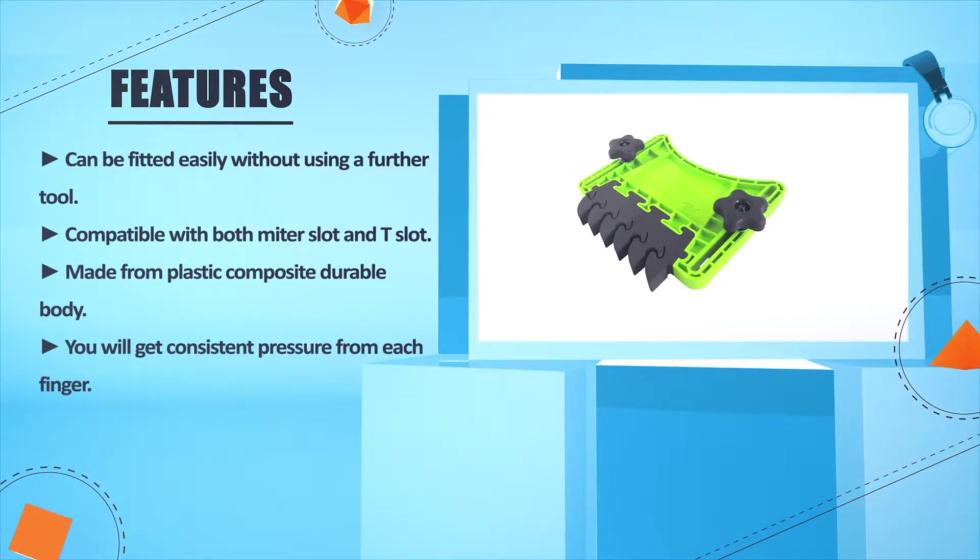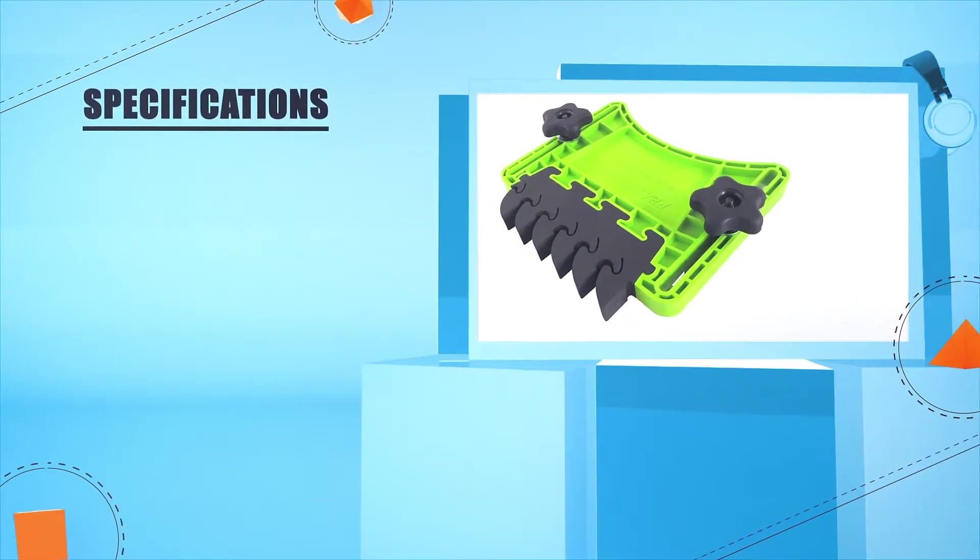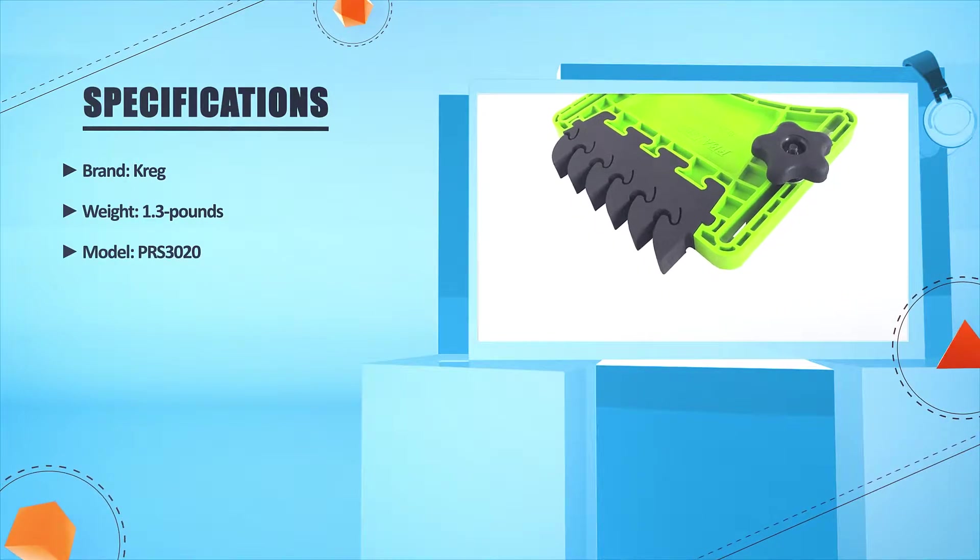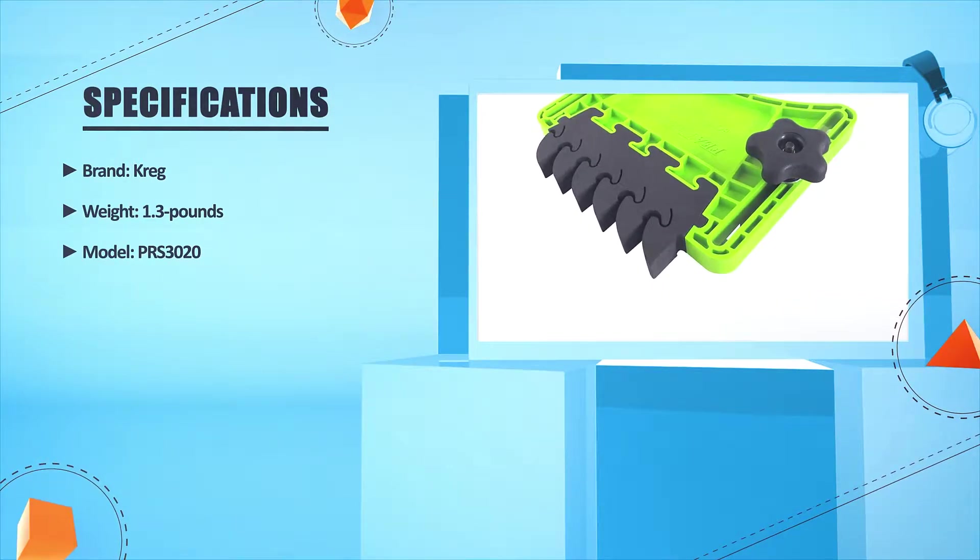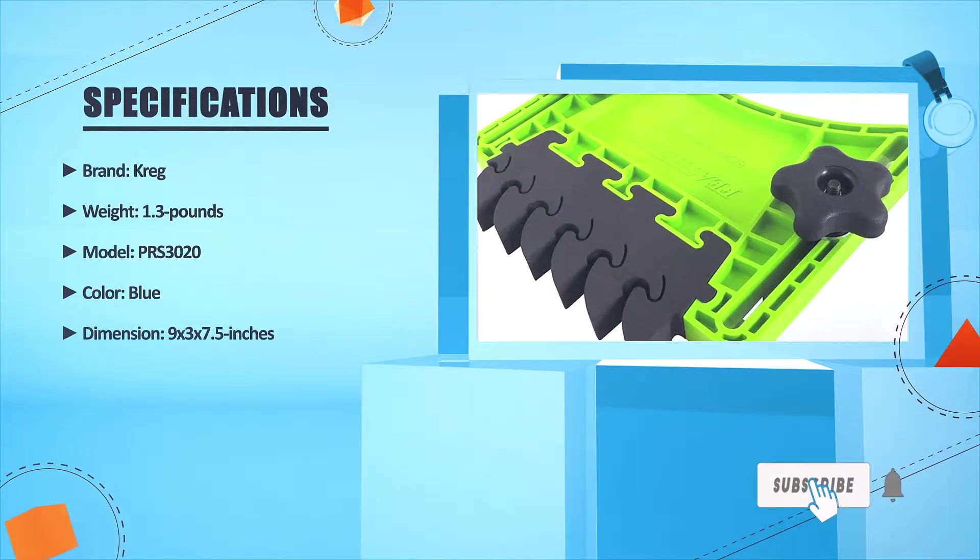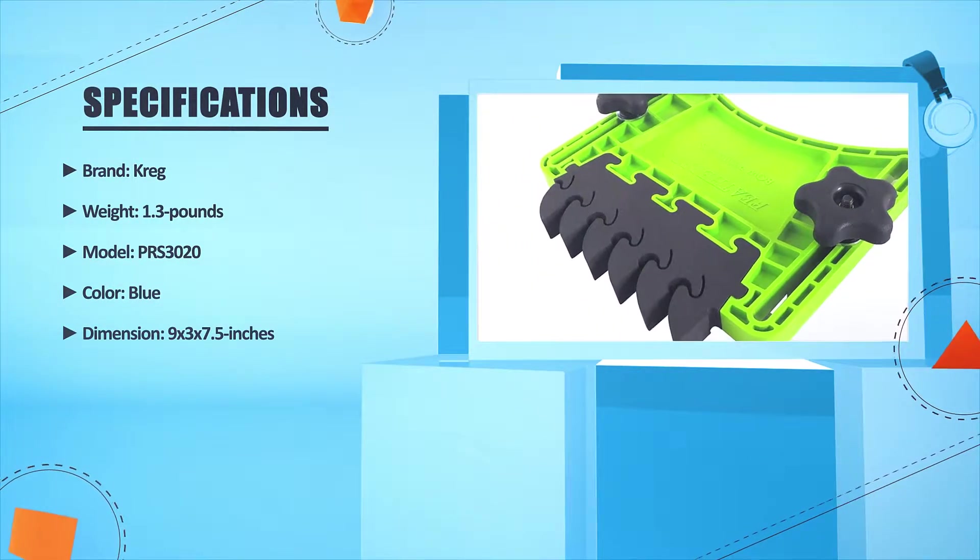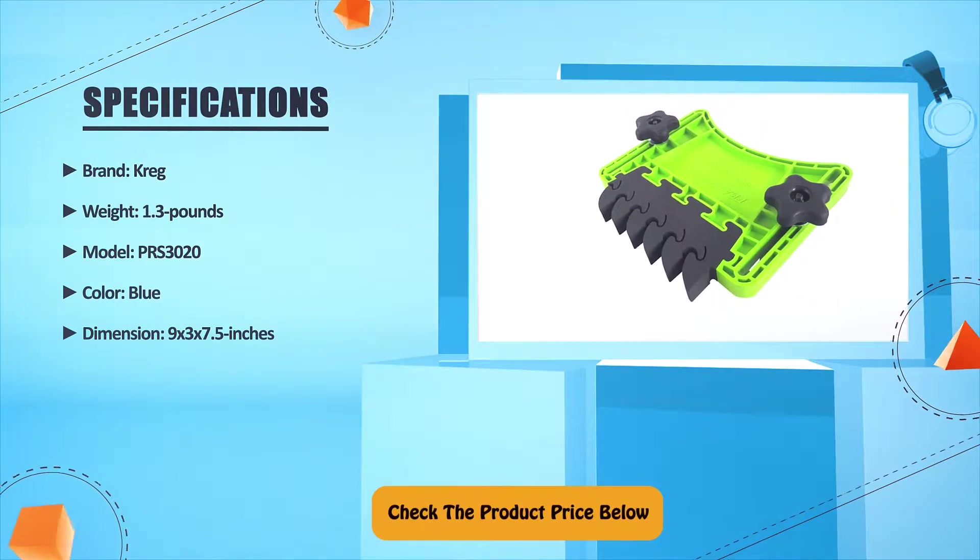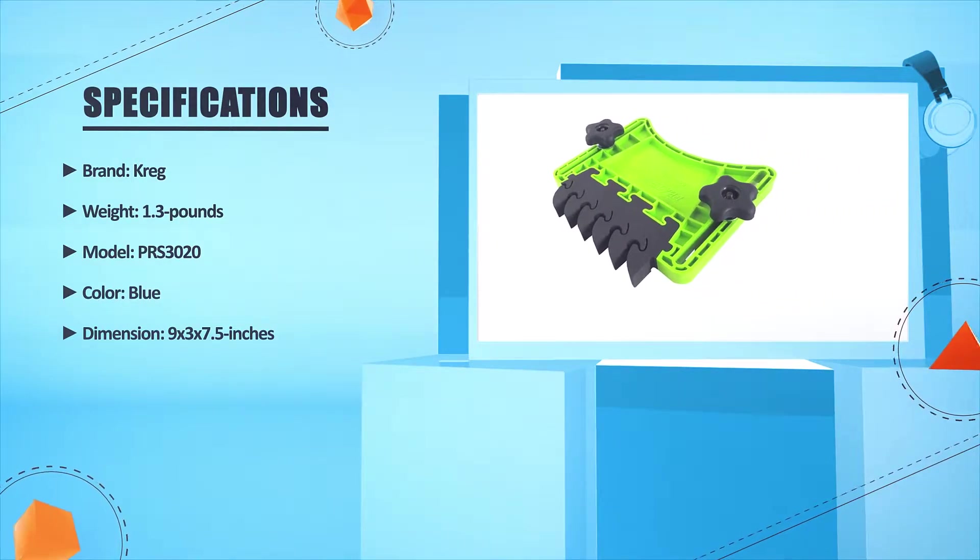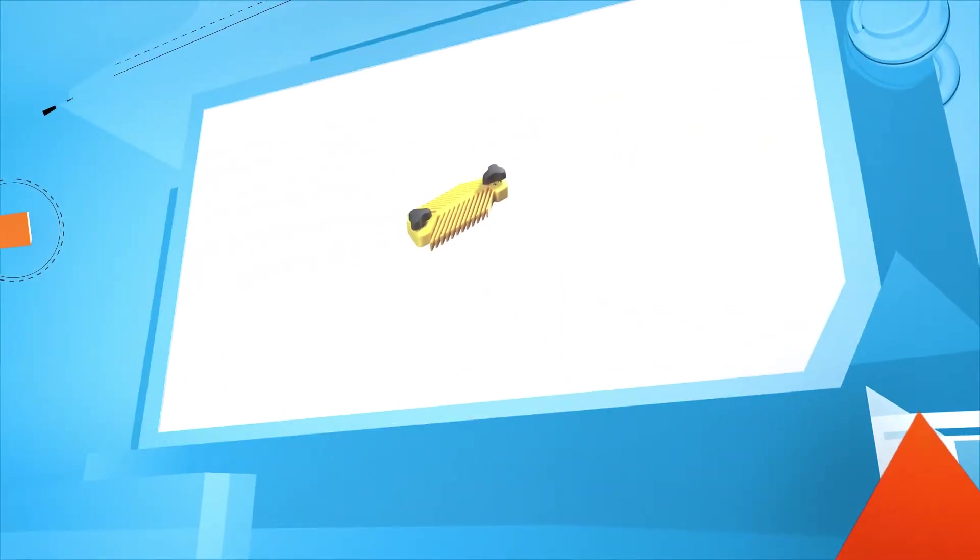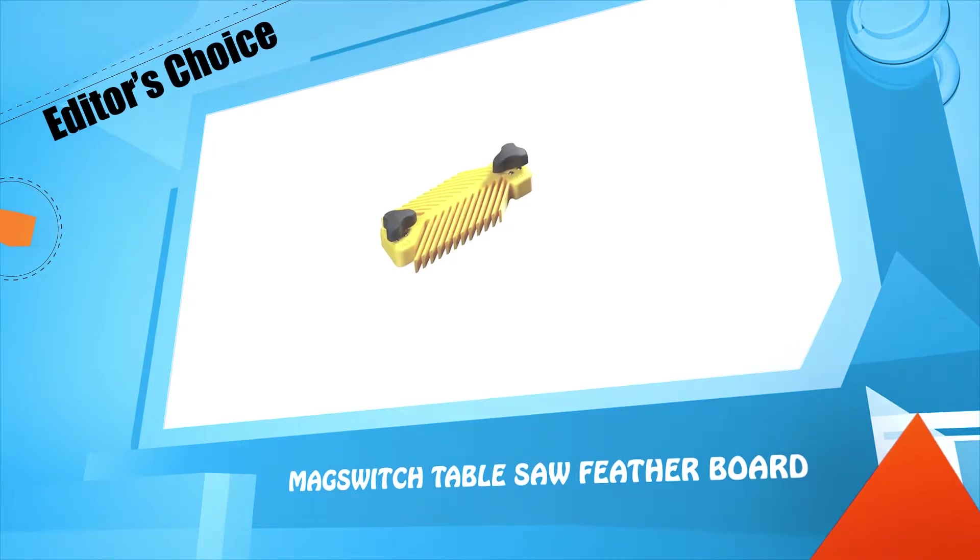Brand: Kreg. Weight: 1.3 pounds. Model: PRS3020. Color: blue. Dimension: 9.2 by 3.2 by 7.5 inches. Check the product price below. Number four: Magswitch Table Saw Featherboard.